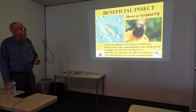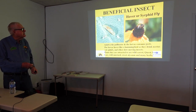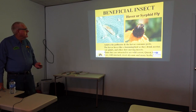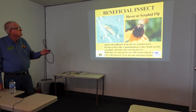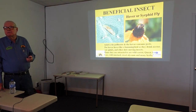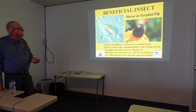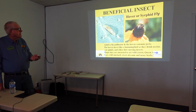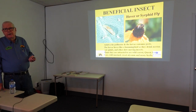The hoverfly kind of looks like a bee, but it's not — it's in the fly family. The adult is a pollinator, and the larva is a predator that eats pests. So both stages are beneficial. The adult hovers like a hummingbird as it drinks nectar. They eat aphids and other slow-moving insects. The plants they're attracted to are wild carrot, Queen Anne's lace, wild mustard, sweet alyssum, and many herbs.